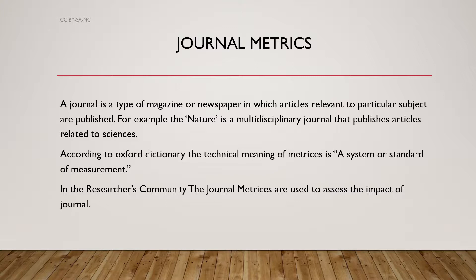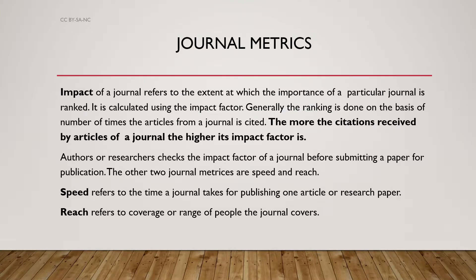What are metrics? According to the Oxford Dictionary, the technical meaning of matrix is a system or standard of measurement. In the research community, journal metrics are used to assess the impact of a journal. Say you have four journals of the same subject — A, B, C, D — so how will you determine which one is more influential? Journal metrics help us in assessing that.